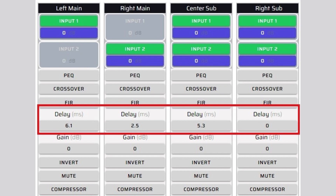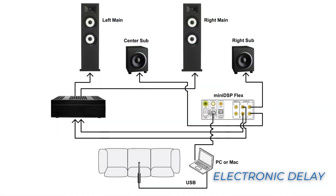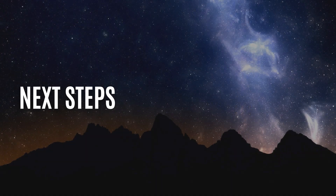You should now have time-aligned all of the speakers and subwoofers in your system to the center listening area. You can verify this by repeating all of the delay measurements; you should expect to see variances of a few milliseconds or less. Now that you have inserted your delay measurements into the device console, you will complete or reinstall your crossover and relative level settings. It's now time to move on to either your REW or DIRAC Live room correction project.